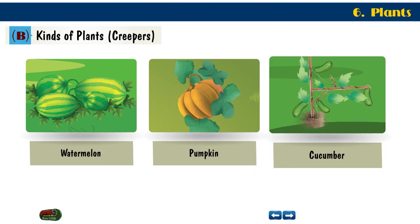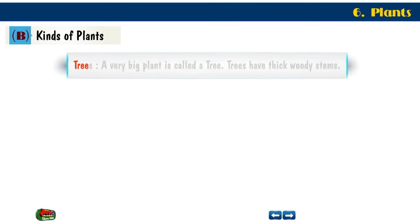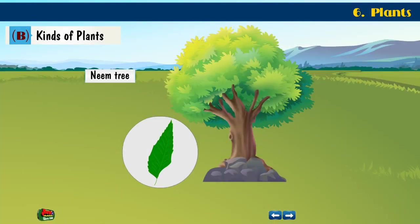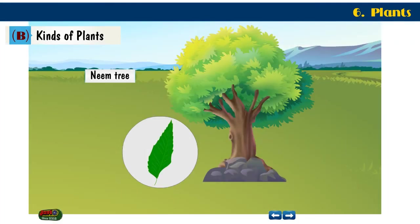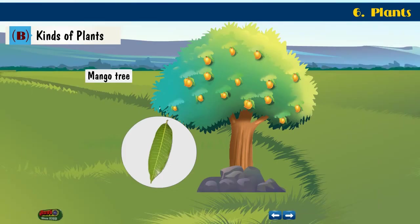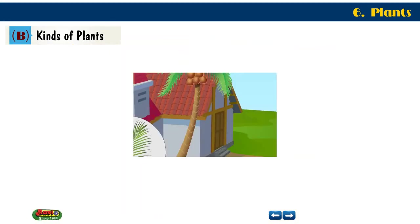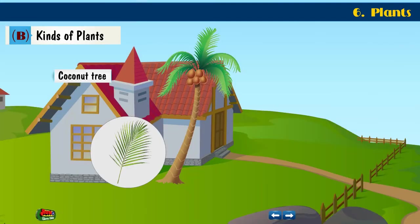Trees. A very big plant is called a tree. Trees have thick, woody stems. Examples are neem tree, mango tree, banyan tree, and coconut tree.